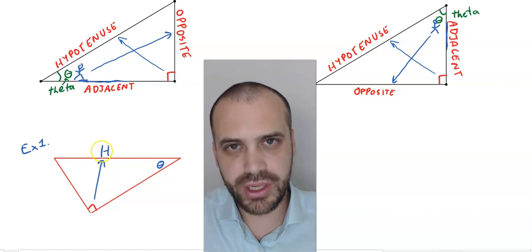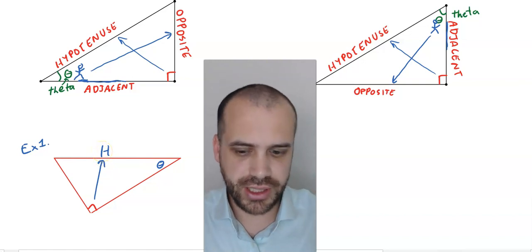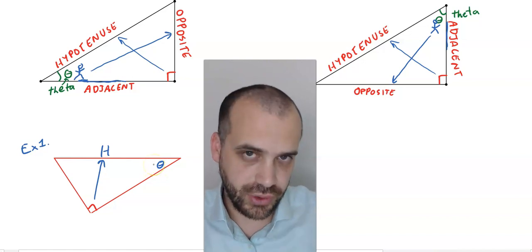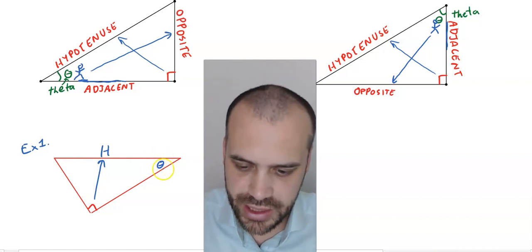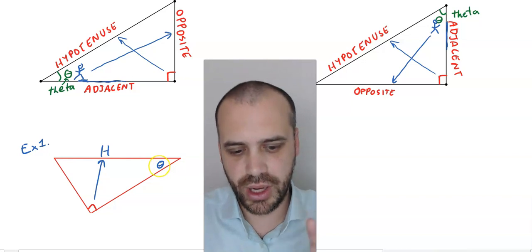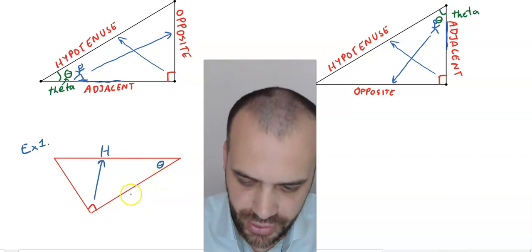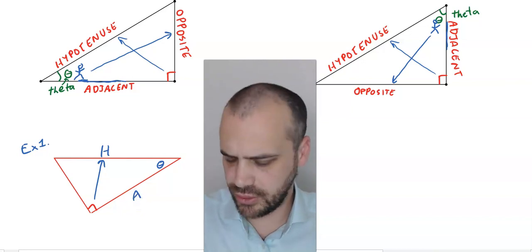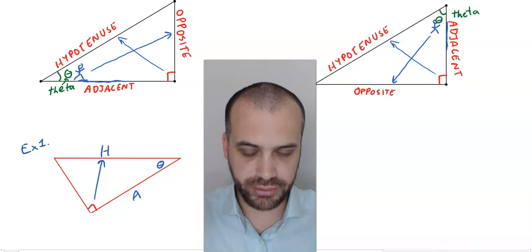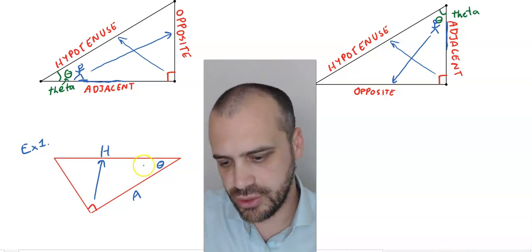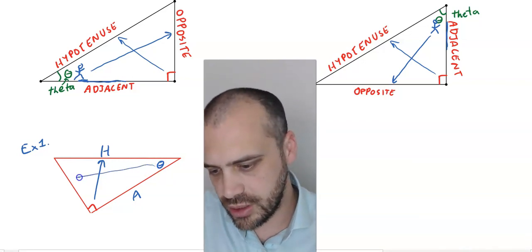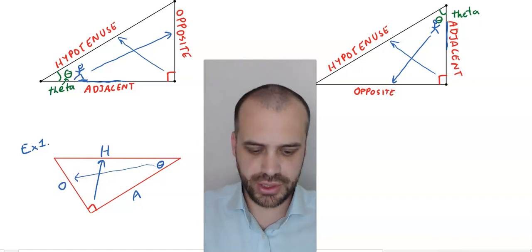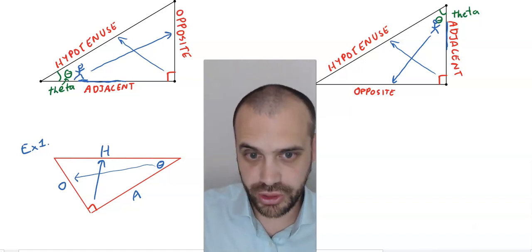The next one I like to find is the adjacent side, because after the hypotenuse it's the easiest — it's the one next to theta. If you were standing at theta you could touch it, so this is the adjacent side. The opposite side must be the remaining one, and it is also the one opposite theta. That's how you label a right angle triangle.